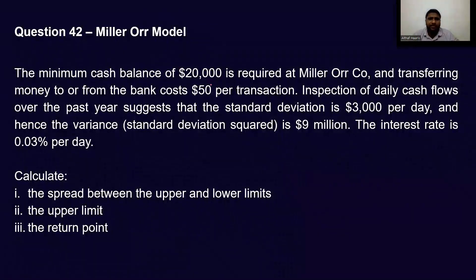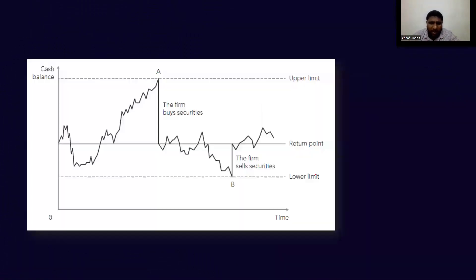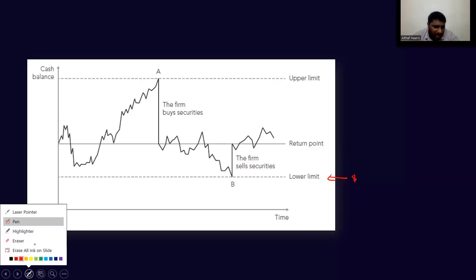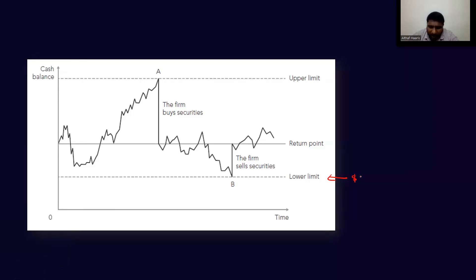The minimum cash balance of 20,000 is required under the Miller-Orr model. Under the Miller-Orr model, you have a lower limit. In this question, the lower limit they have decided is 20,000.